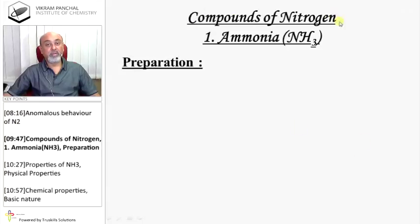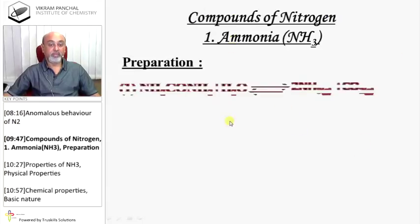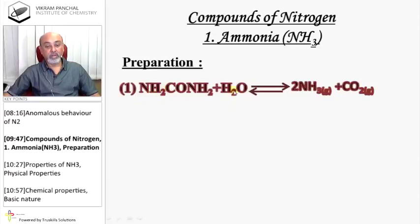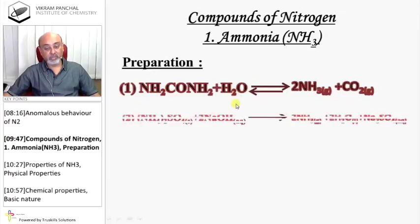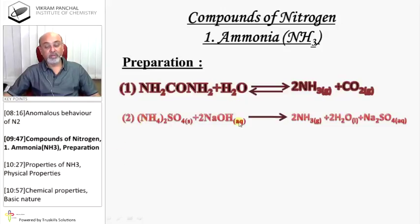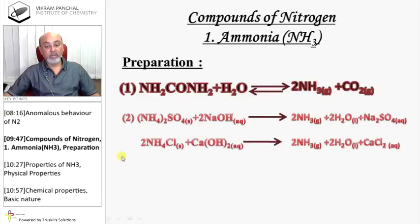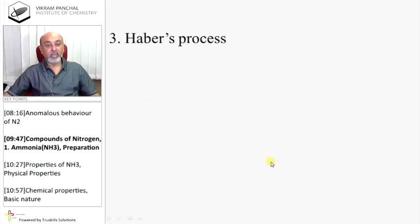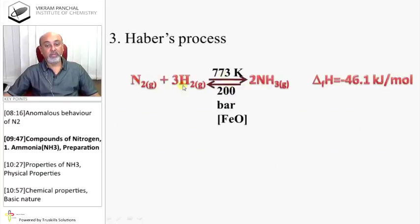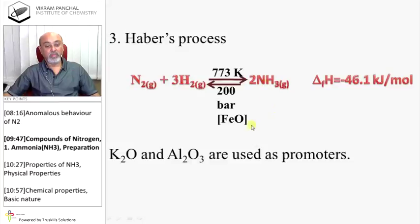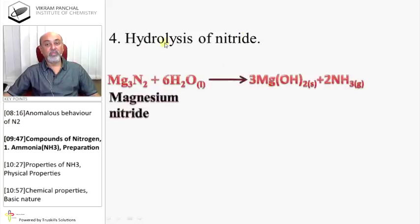Compounds of Nitrogen - Ammonia Preparation: Urea on dissolving with H2O gives NH3. Ammonium sulfate reacts with NaOH and releases ammonia. Ammonium chloride reacts with calcium hydroxide and produces ammonia. Haber process: Nitrogen reacts with hydrogen to give ammonia, Fe3O4 and Al2O3 are used as promoters. Hydrolysis of nitrides: Magnesium nitride dissolves in water and gives ammonia.